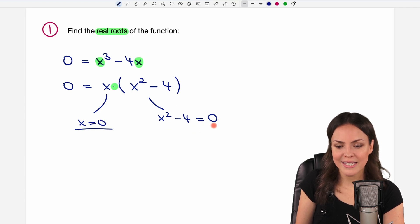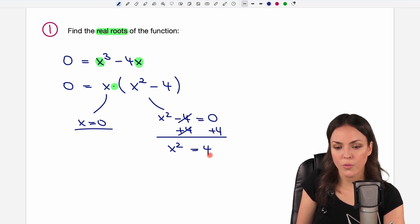But maybe there are more roots in here. So we solve this equation for x as well. We have x squared in here and a number. So we can bring this number on the other side by adding four on both sides. Then we get x squared on the left side. These two cancel out. And on the right side, we have zero plus four equals four.